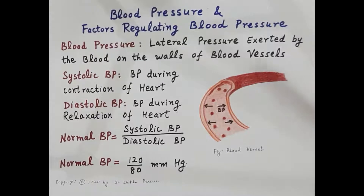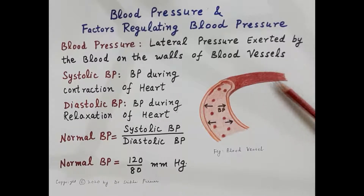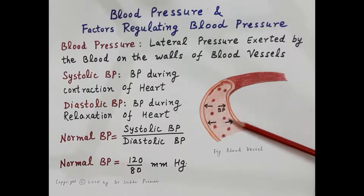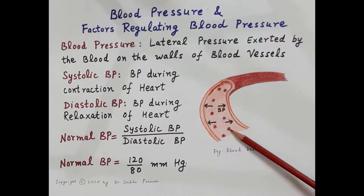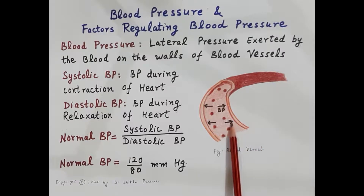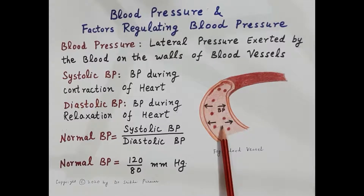Under the introduction to hemodynamics, we'll talk about blood pressure and the factors regulating blood pressure. The lateral pressure exerted by the blood on the walls of the blood vessels is called blood pressure. This is a blood vessel where blood is flowing, and the arrow shows the lateral pressure exerted by the circulating blood on the walls of the blood vessels.